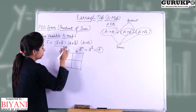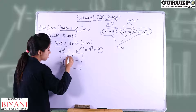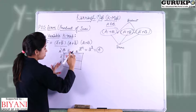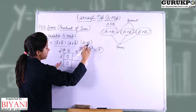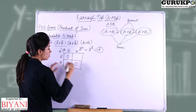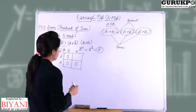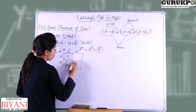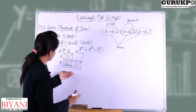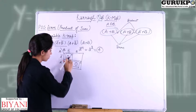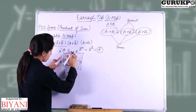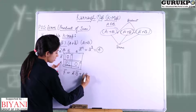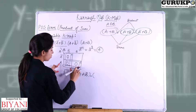Now let us consider the first term A-bar plus B-bar — we will write 0 in its corresponding cell. The second term is A plus B-bar — here it will be 0. The third term is A plus B — here it will be 0. Now we have to do the grouping: these two zeros will make one group and these two zeros will make another group. Now we have to write the function, so f-bar will be equal to — for the first group: A-bar·B-bar plus A·B-bar.